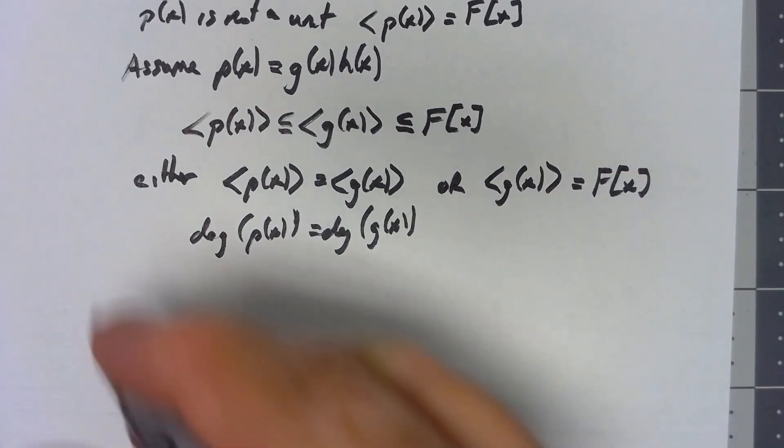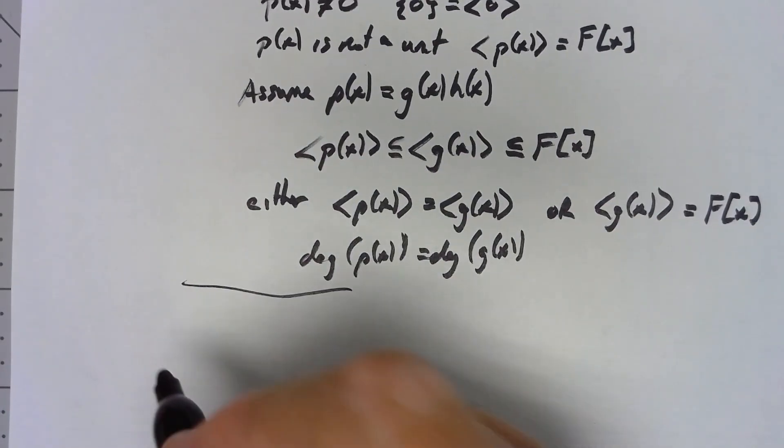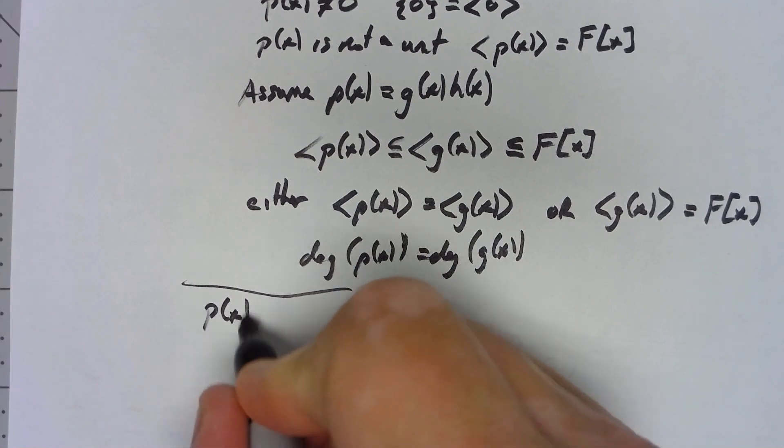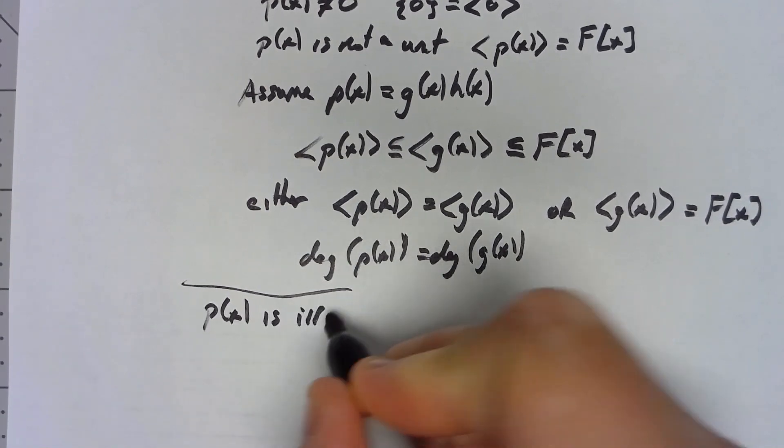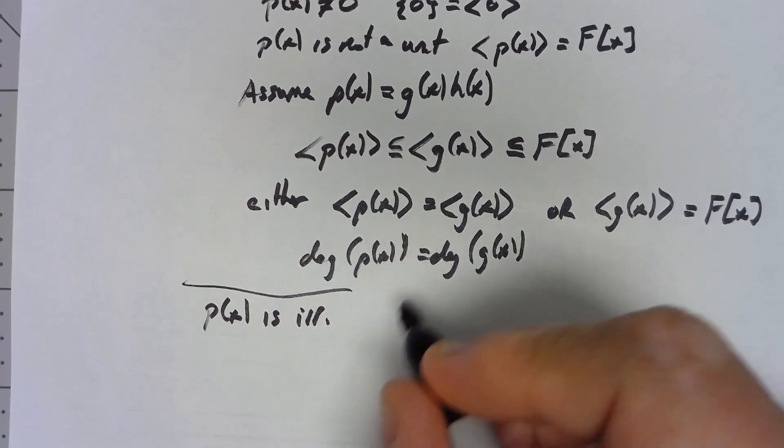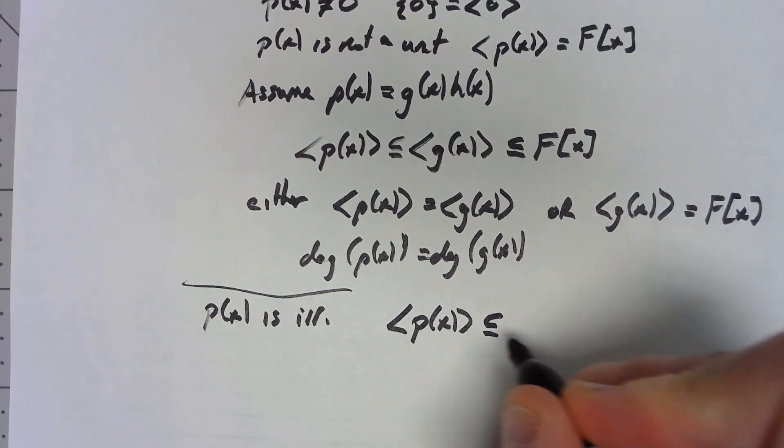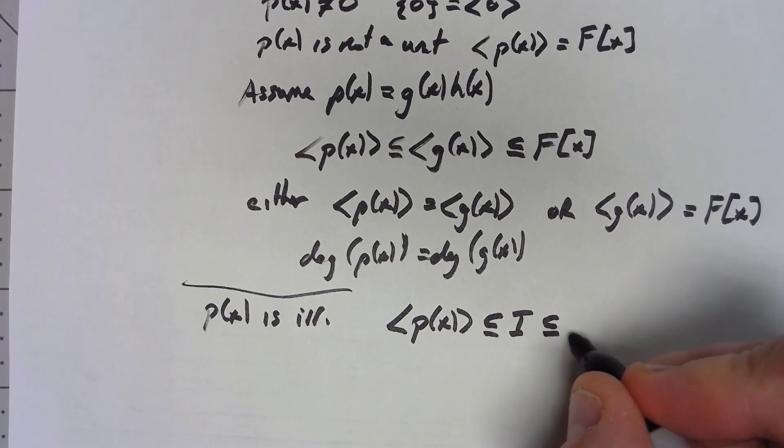Okay, what about the other way? Let's suppose that p(x) is irreducible and then, let's say we've got the ideal generated by p(x). Let's say that there's some other ideal that's contained with that and that's the subset of F[x].